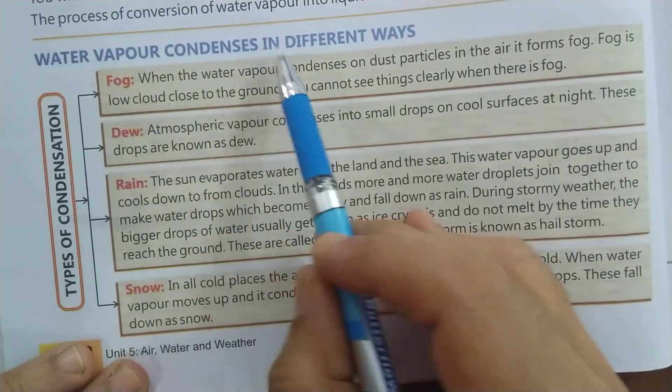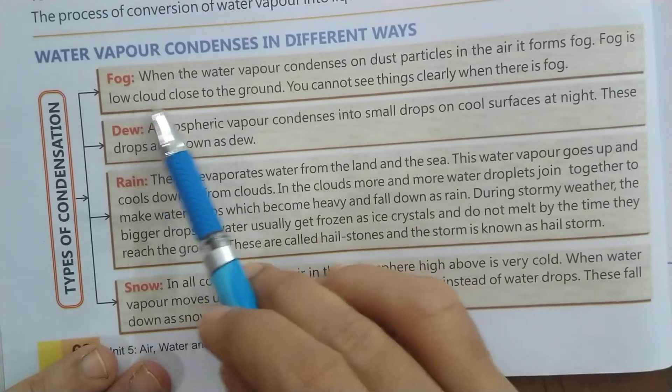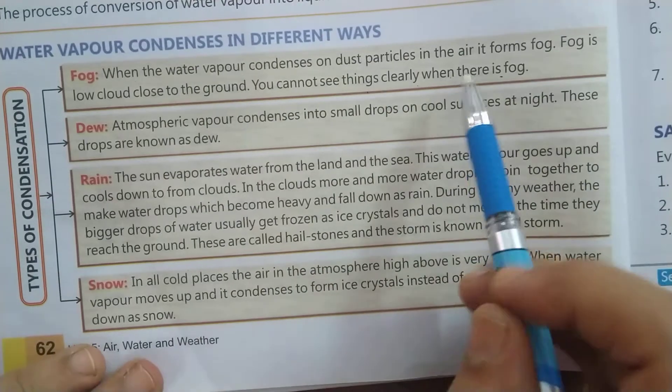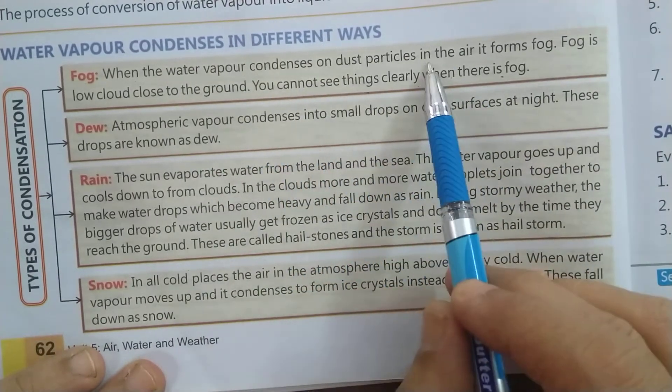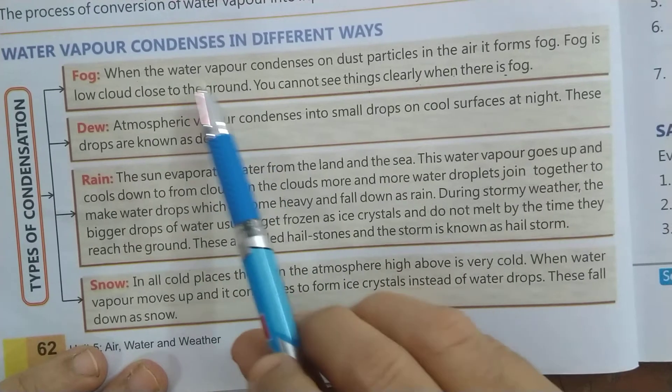Water vapor condenses in different ways. Fog: when the water vapor condenses on dust particles in the air, it forms fog. Fog is a low cloud close to the ground. You cannot see things clearly when there is fog. जब water vapor, air में मौजूद dust particles पर condense होता है — मतलब ठंडा होता है — तो उसे हम बोलते हैं fog। Fog एक तरह का जमीन के नज़दीक का बादल है। जब fog होता है तो चीज़ों को clearly नहीं देख सकते।